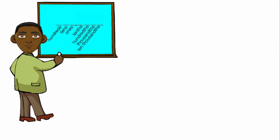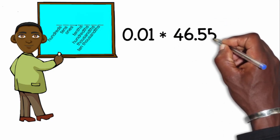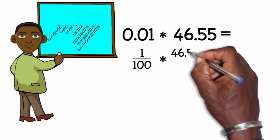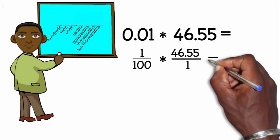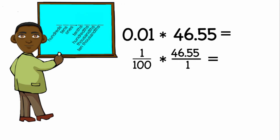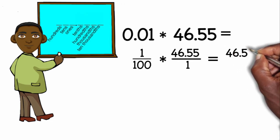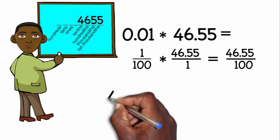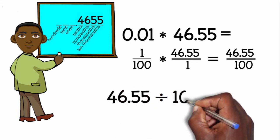Now for the third problem: 1 hundredth times 46 and 55 hundredths. First thing I'm going to do is turn that 1 hundredths to a fraction — it's over 100. I'll change the 46 and 55 hundredths to a fraction by putting a 1 at the bottom. Now I can multiply top times top and bottom times bottom. 1 times 46 and 55 hundredths would be 46 and 55 hundredths, and 100 times 1 is 100. I'm going to turn this fraction into a decimal by writing the division problem: 46 and 55 hundredths divided by 100.